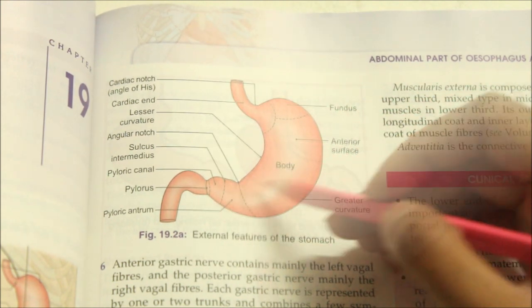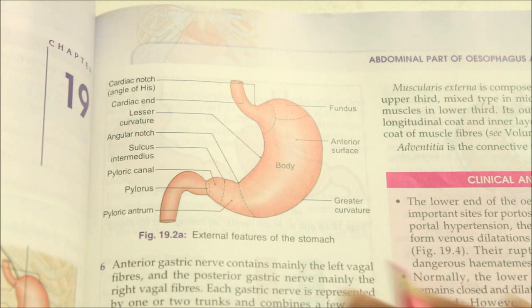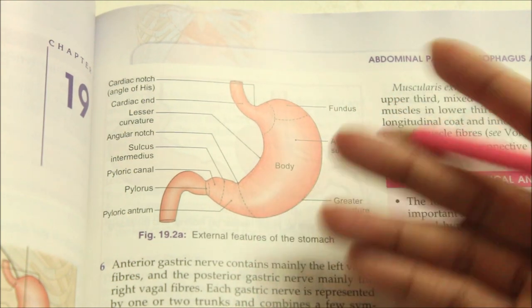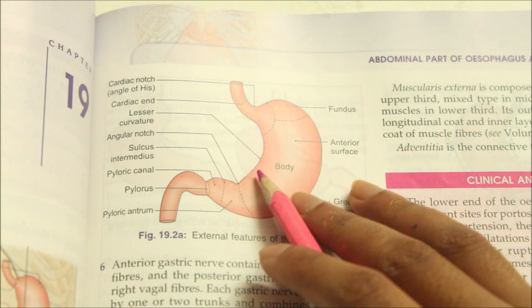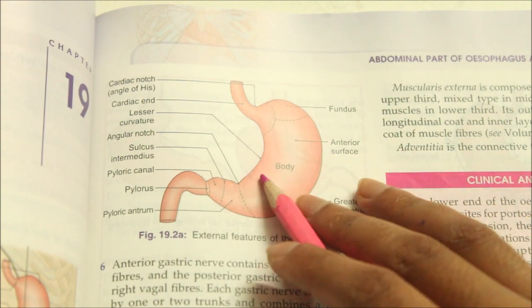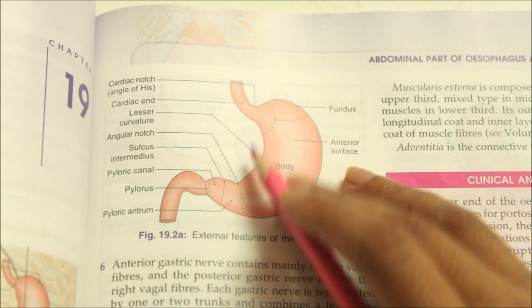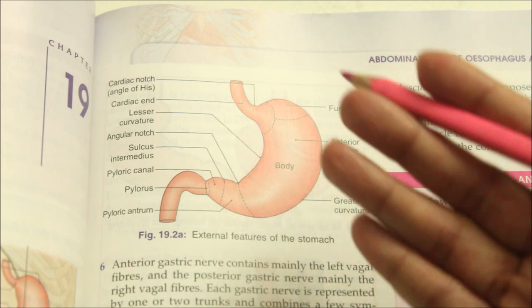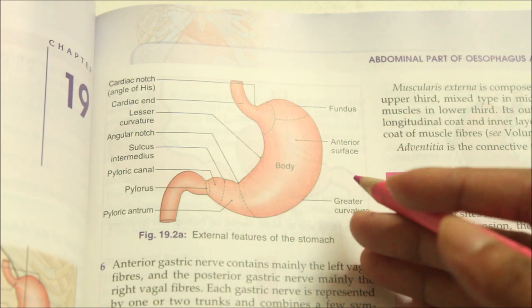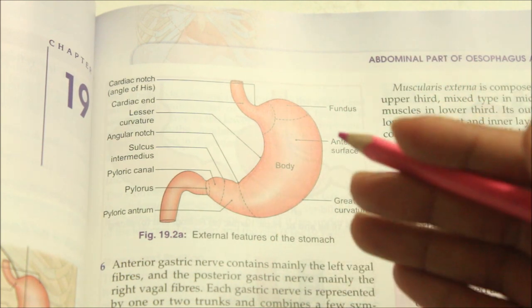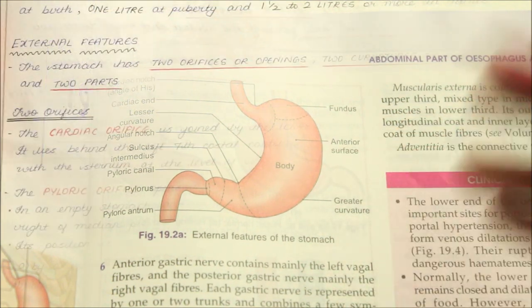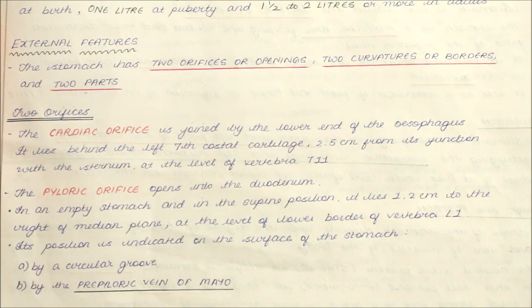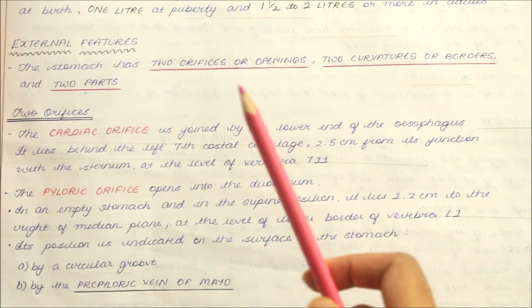The anterior surface, or anterosuperior surface, faces forwards and upwards, while the posterior, or posteroinferior surface, faces backwards and downwards.